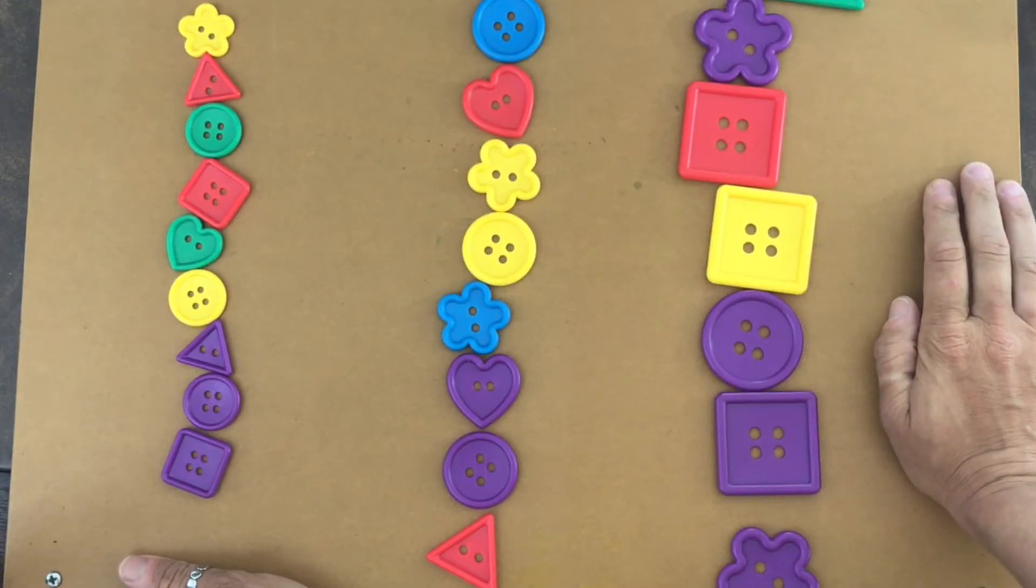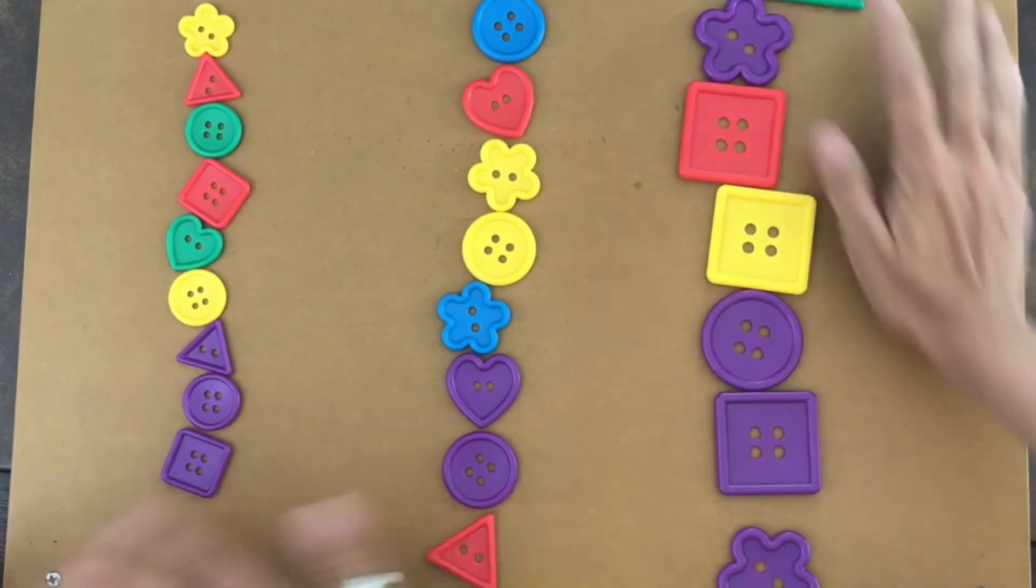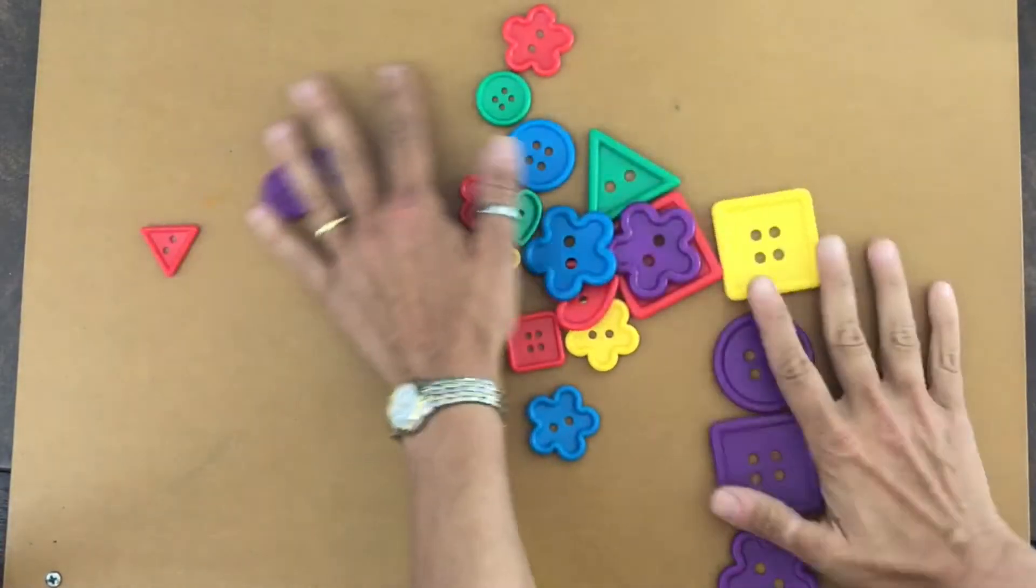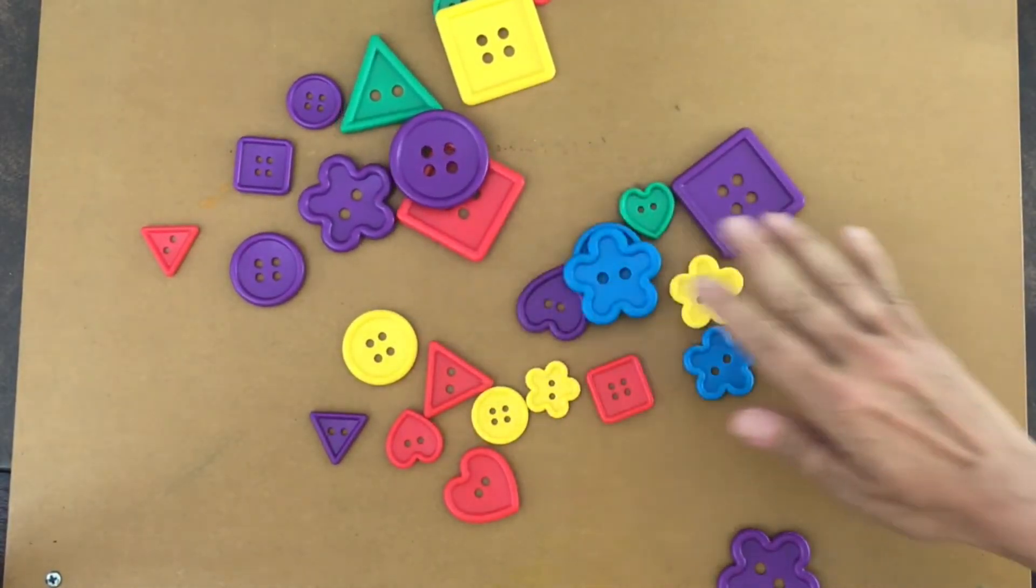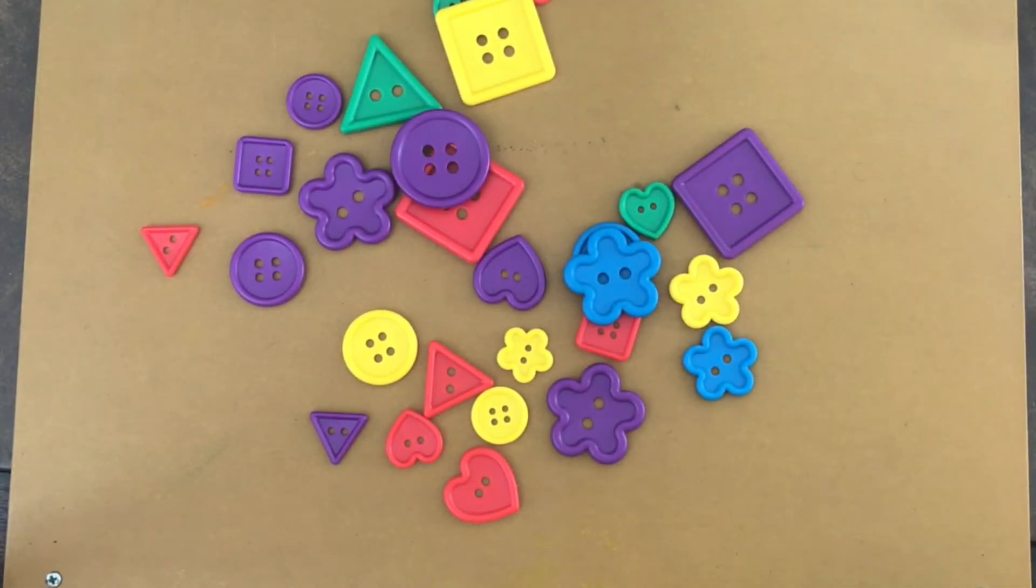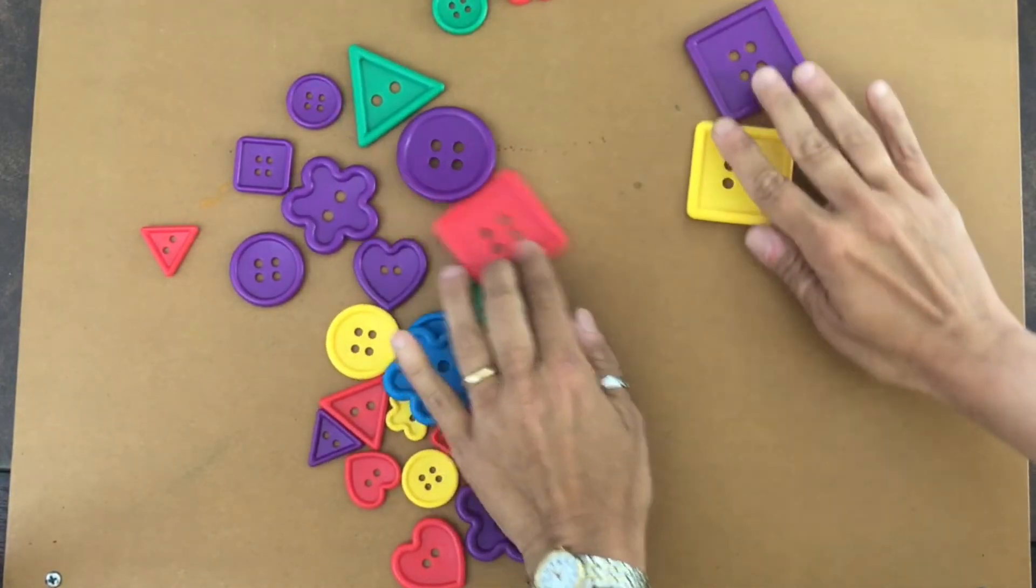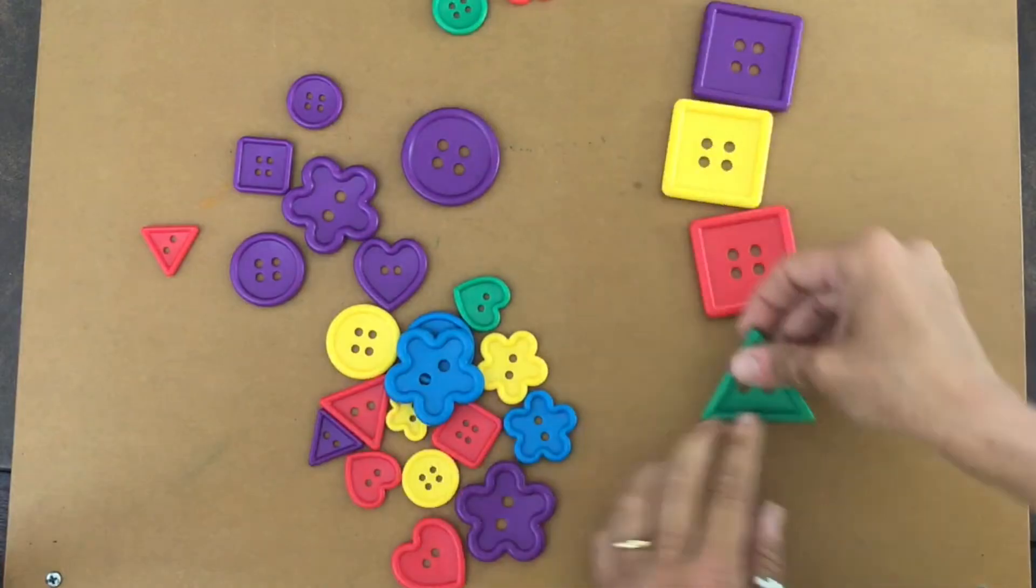How about we sort them by those that are round and those that have sides? So these have sides to them, these are rounded.